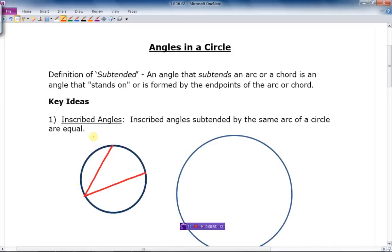Subtended means it's the arc that is basically this angle stands on. In other words, this part right here of the arc. So that part of the circle is subtended by that angle.